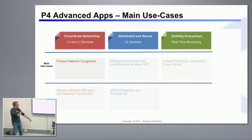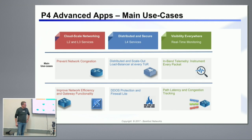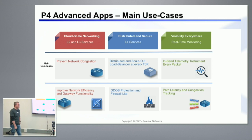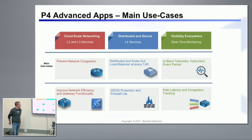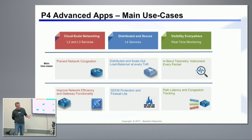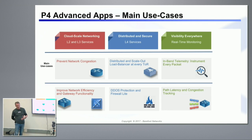In our conversations with customers, we are discussing how they can improve their current layer two and layer three services. One interesting example is that the Tofino chip can generate and consume BFD packets entirely in the data plane — there is no control plane intervention. So one application is how we can make routing protocols react much faster to specific events like failures in the network.